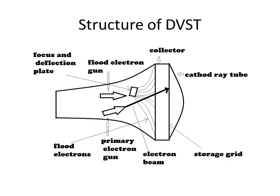This is the structure of DVST. We have a collector over here, this is our storage grid. We have two electron guns — this one is our flood electron gun and this is our primary electron gun, also called the writing gun. These are the deflection and focus plates.